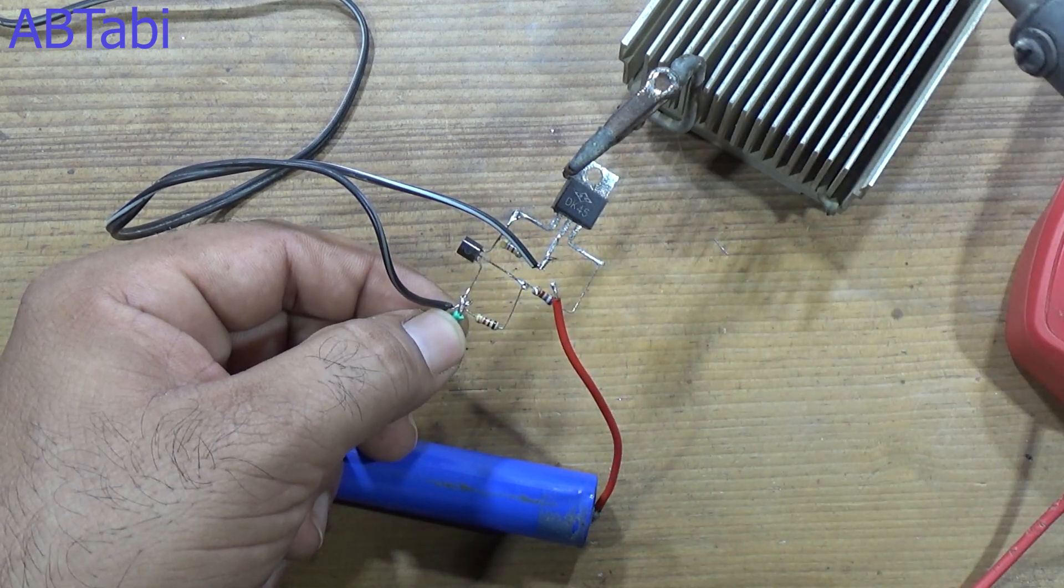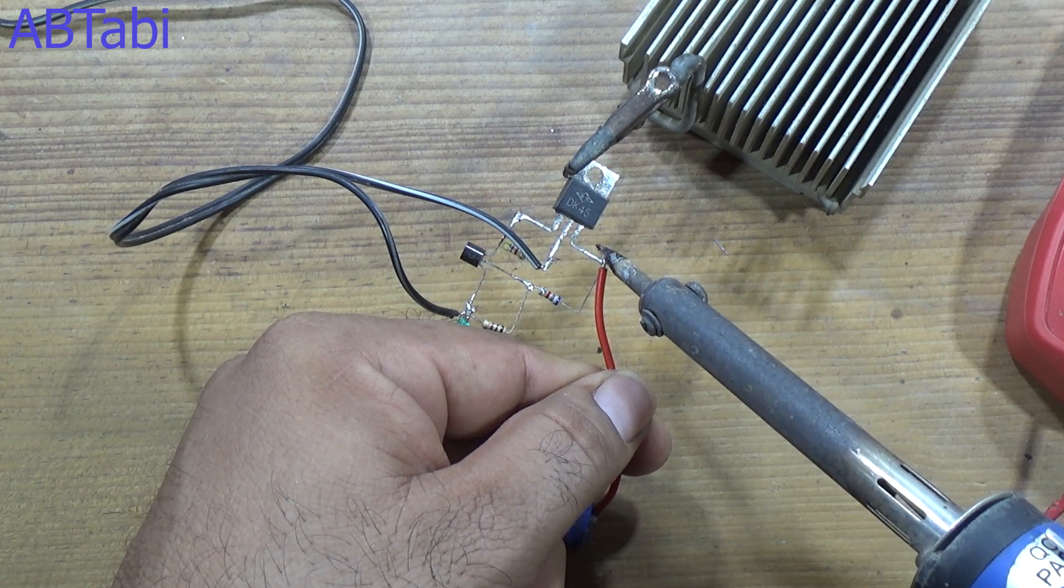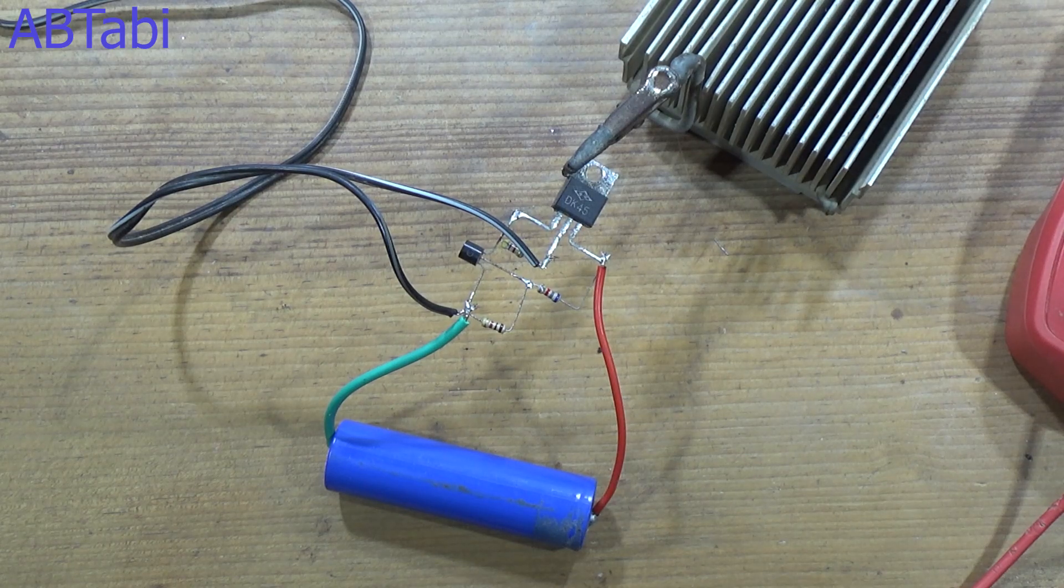Connect the battery with circuit: negative side connects with transistor BC547 emitter pin, and battery positive terminal connects with DK45 emitter pin.